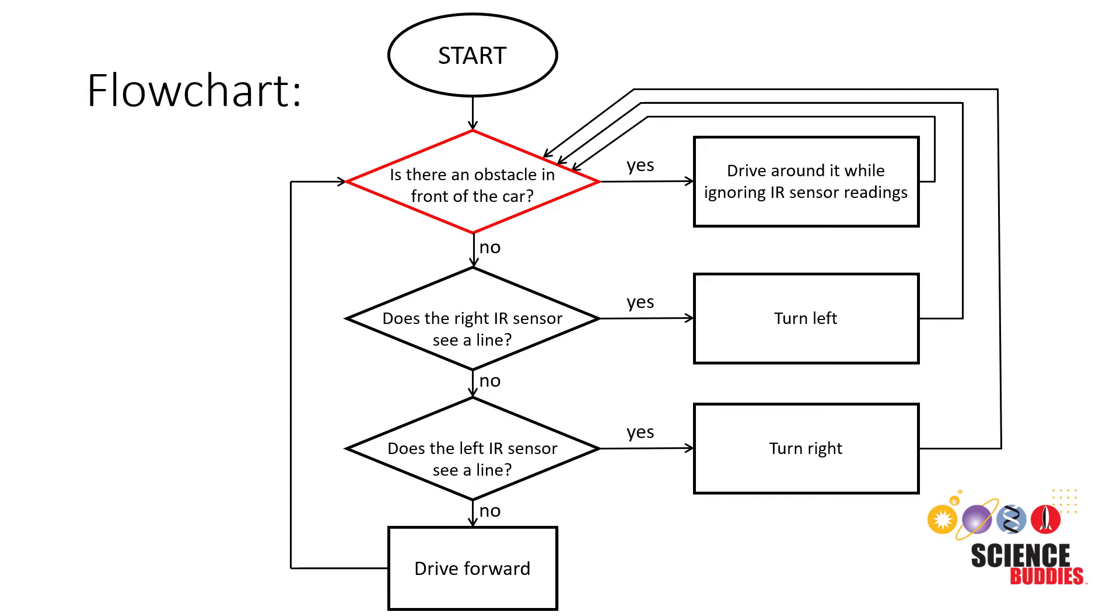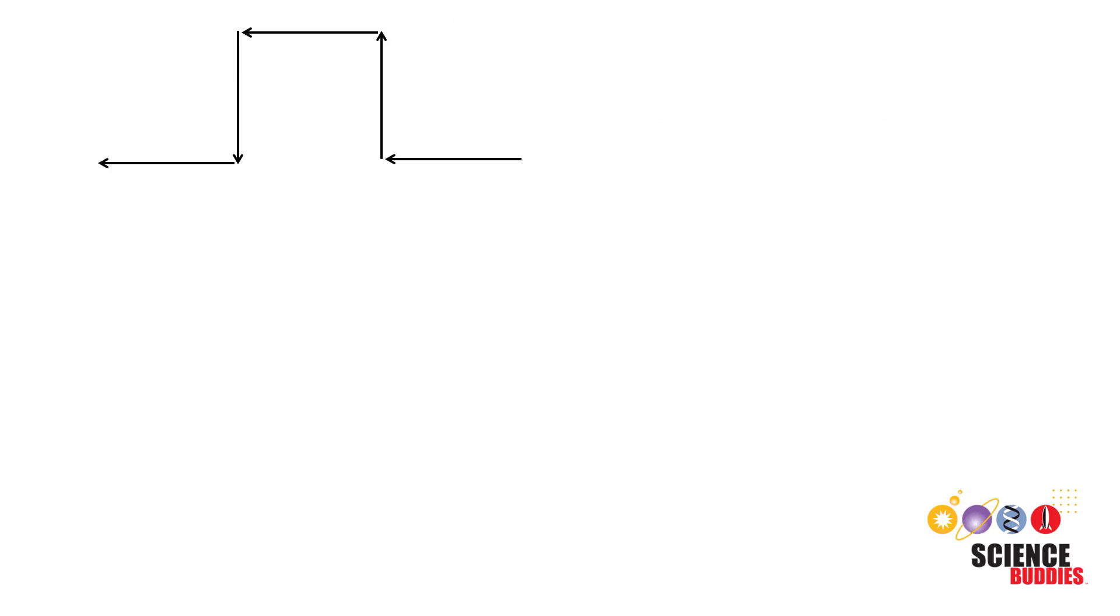However, sometimes you might want to specify parts of your algorithm in more detail. For example, driving around an obstacle while ignoring infrared sensor readings, it might be helpful to define exactly what that means. So say that we want to hardcode our car to drive in a certain shape to get around an obstacle while ignoring sensor readings.